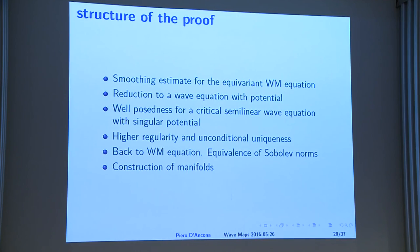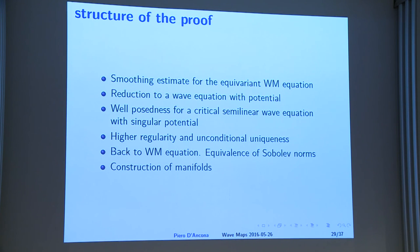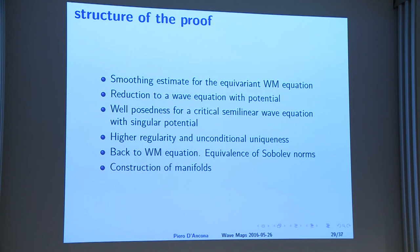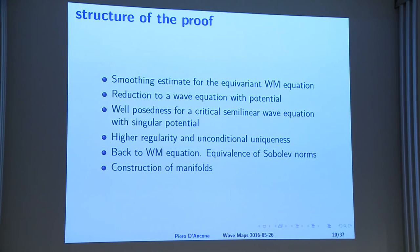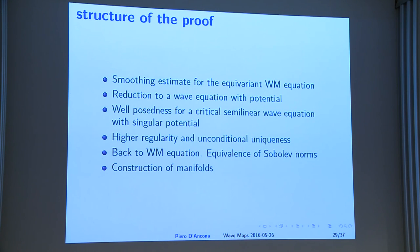Once you have smoothing estimates, you can prove Strichartz estimates for this equation with a singular potential, and this can be done nicely. At that point you have all necessary tools — more than sufficient — you don't even need the full strength of Strichartz estimates, just enough to implement the fixed point method for the critical semi-linear wave equation. There are some singularities in the coefficients inside and outside the non-linear term, but this is just technical: you prove some radial estimates with singular coefficients.